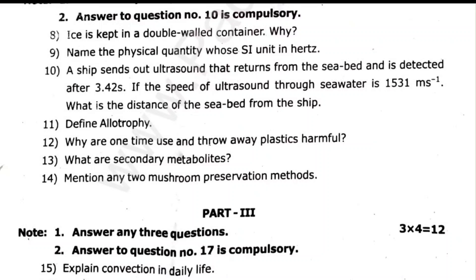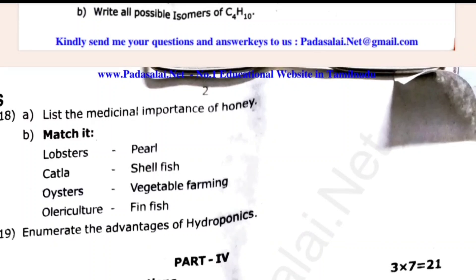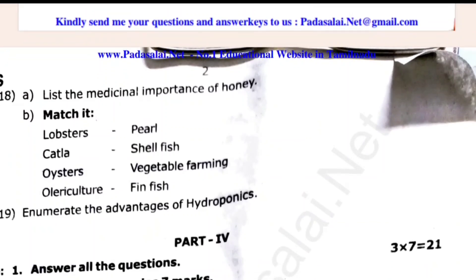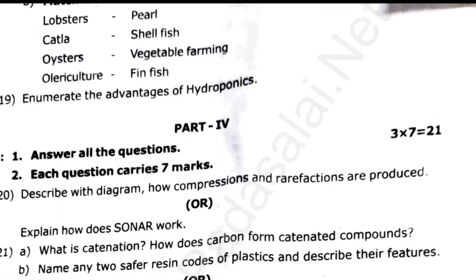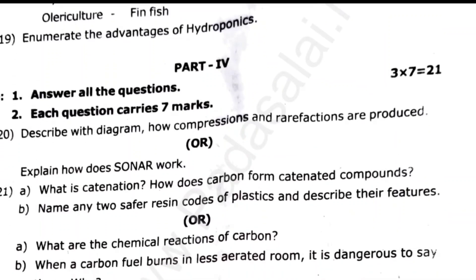Write all possible isomers of C4H10. What is the candidate? How is carbon different from other carbon compounds? Name any two safer resin codes for plastics and describe their features. How does carbon react if carbon is burnt in less elevated rooms — it is dangerous, explain why.